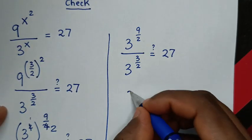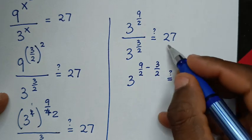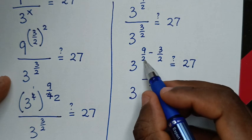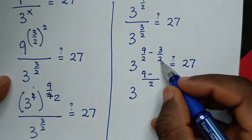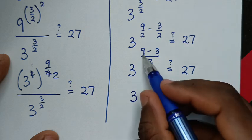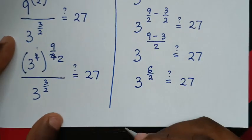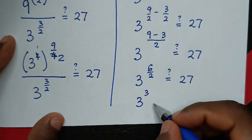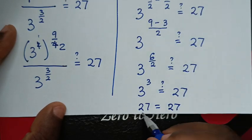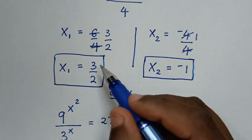Applying the division rule with the same base of 3, we subtract the exponents: 9/2 minus 3/2. Dividing both numerators by 2: 1 times 9 minus 1 times 3 gives 9 minus 3 equals 6, over 2. So we get 3 to the power of 6/2, which is 3 to the power of 3, which equals 27. Left side equals right side, so x equals 3/2 is confirmed correct.